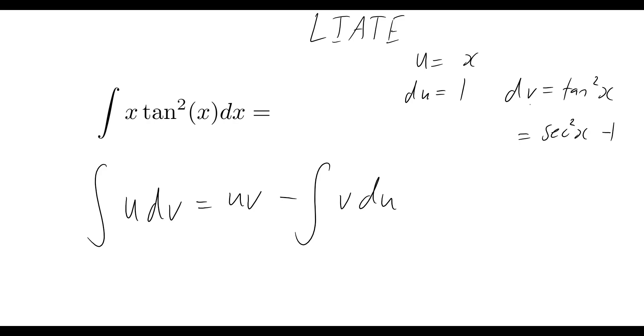And so if I wanted to integrate v, or dv rather, to figure out what v is equal to, now is a time when it is actually much easier for us to integrate sec squared x minus 1, as opposed to integrating tan squared x. So what we get now is that v is equal to tan x minus x.